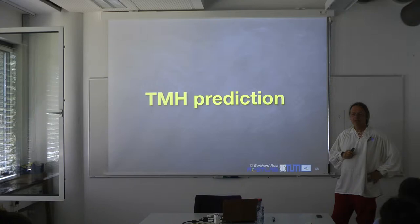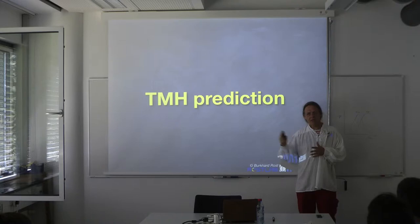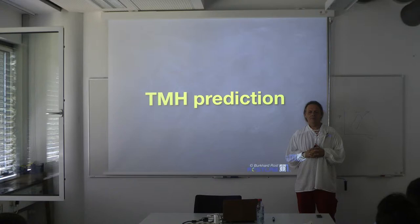What would happen if we ran a regular secondary structure prediction method and predicted membrane helices? Would it work? Last week I talked about secondary structure prediction — methods that simply predict whether residues are in a helix, strand, or other. So why not apply them to membrane helices? Would that work?